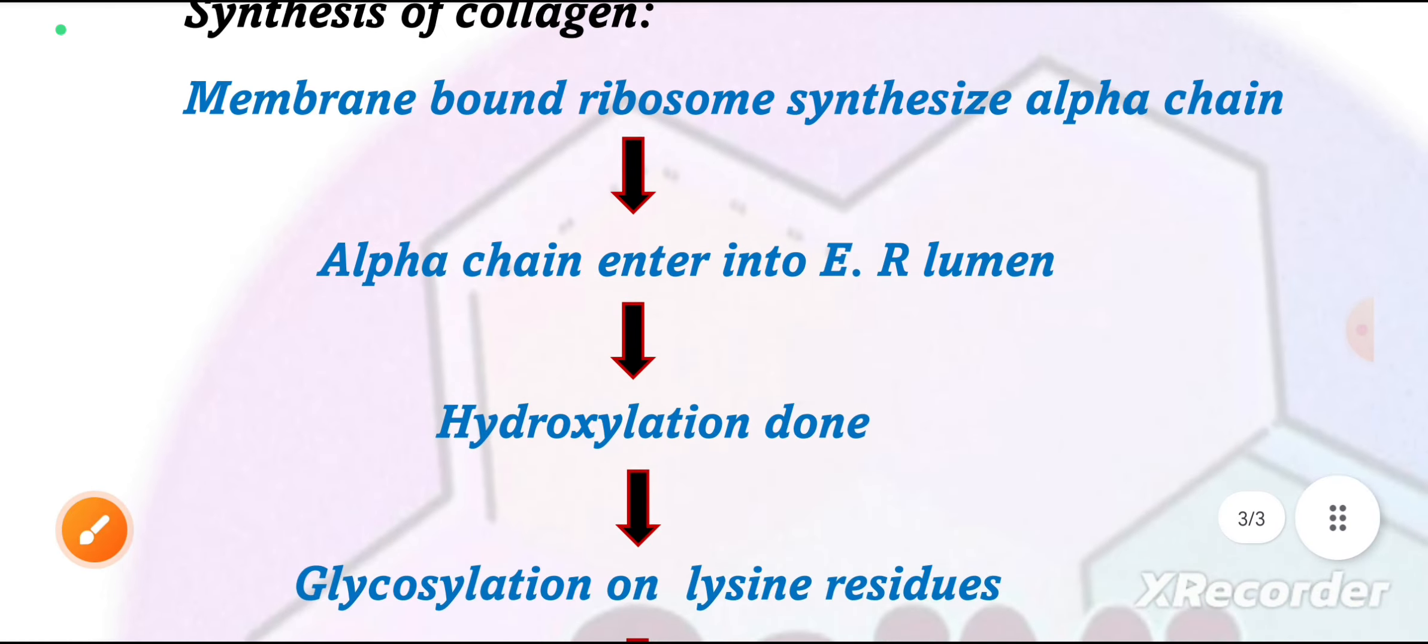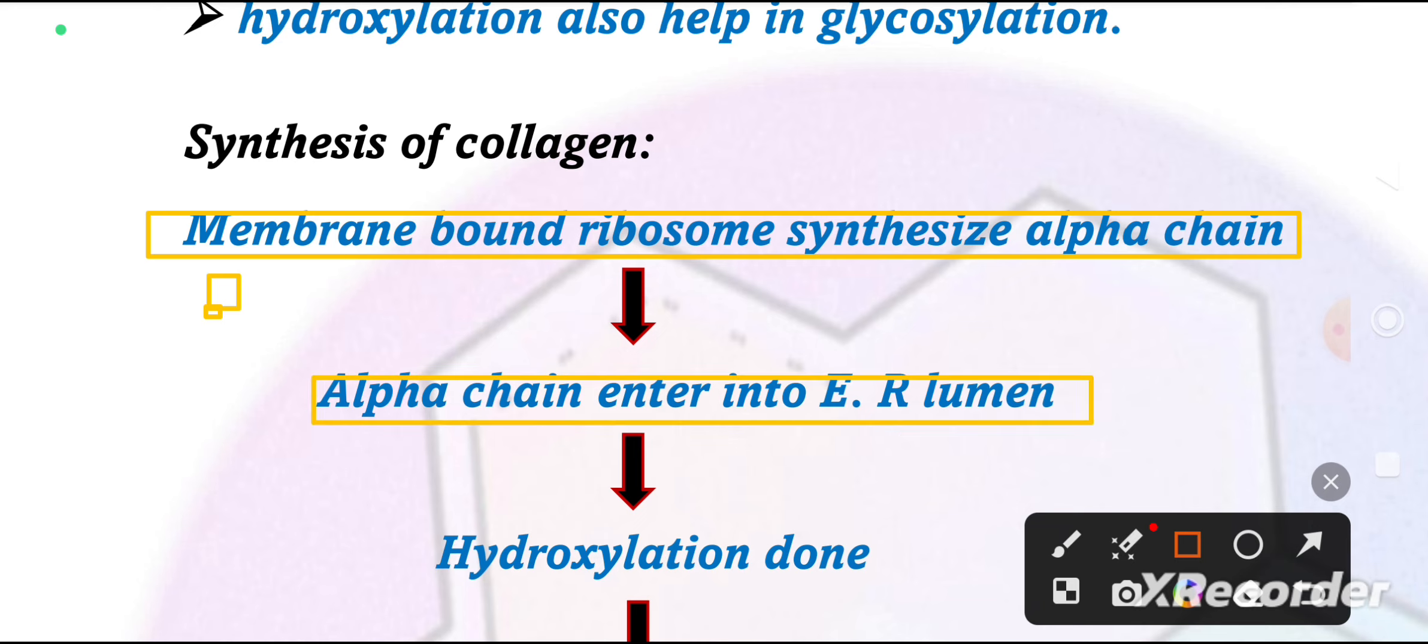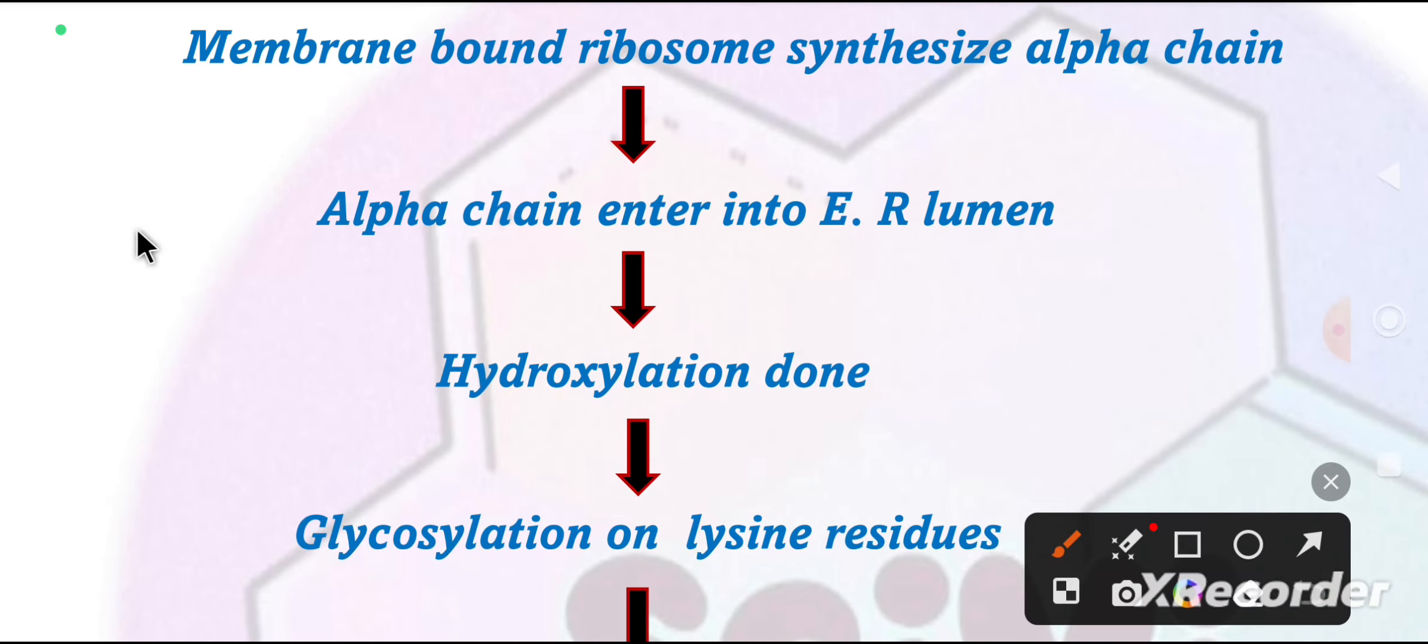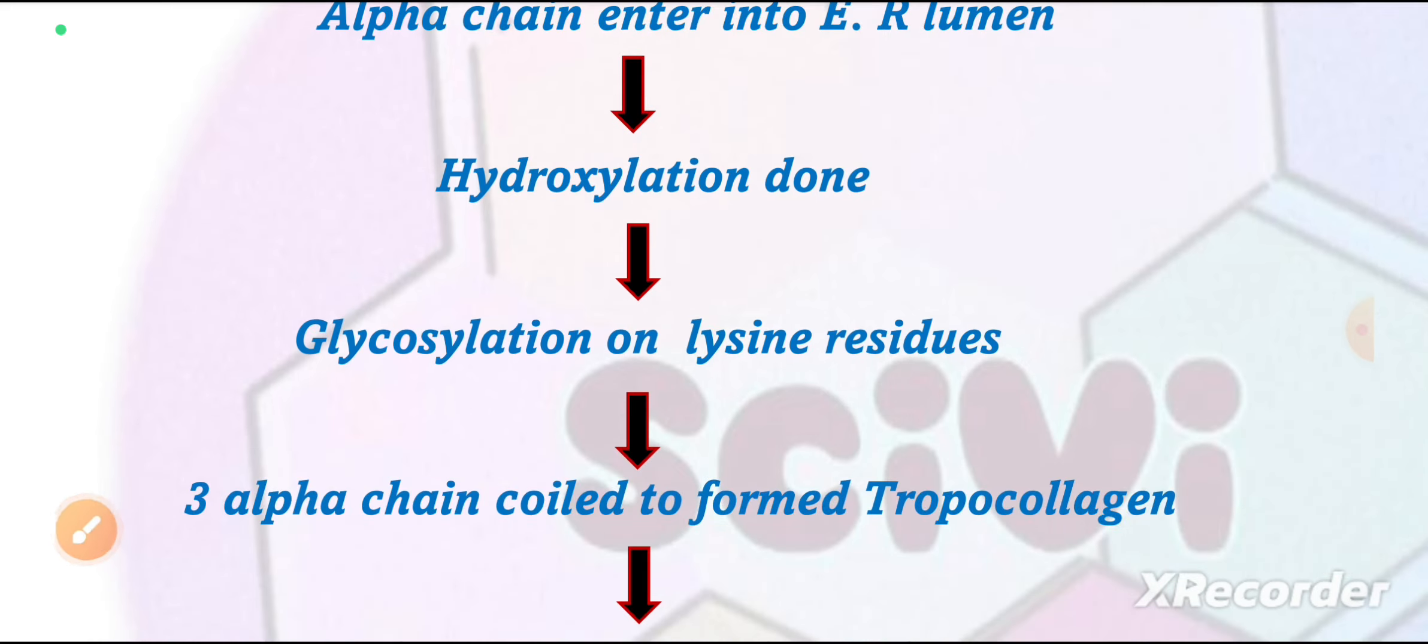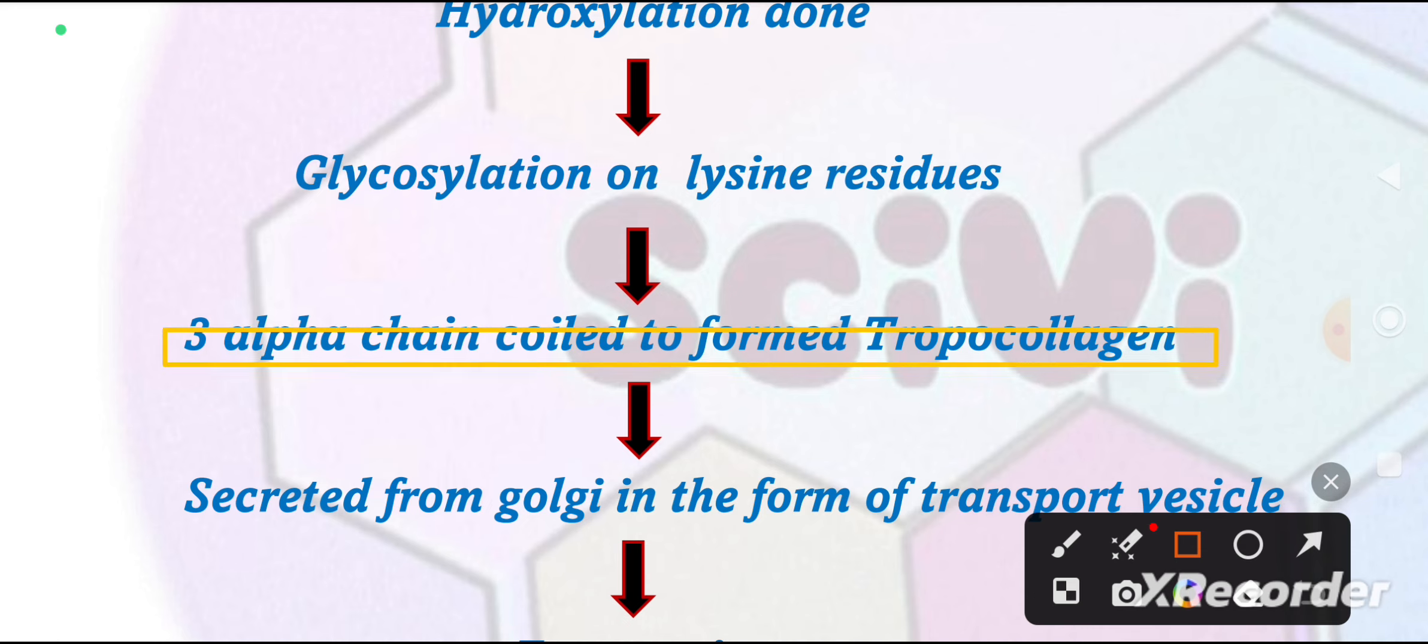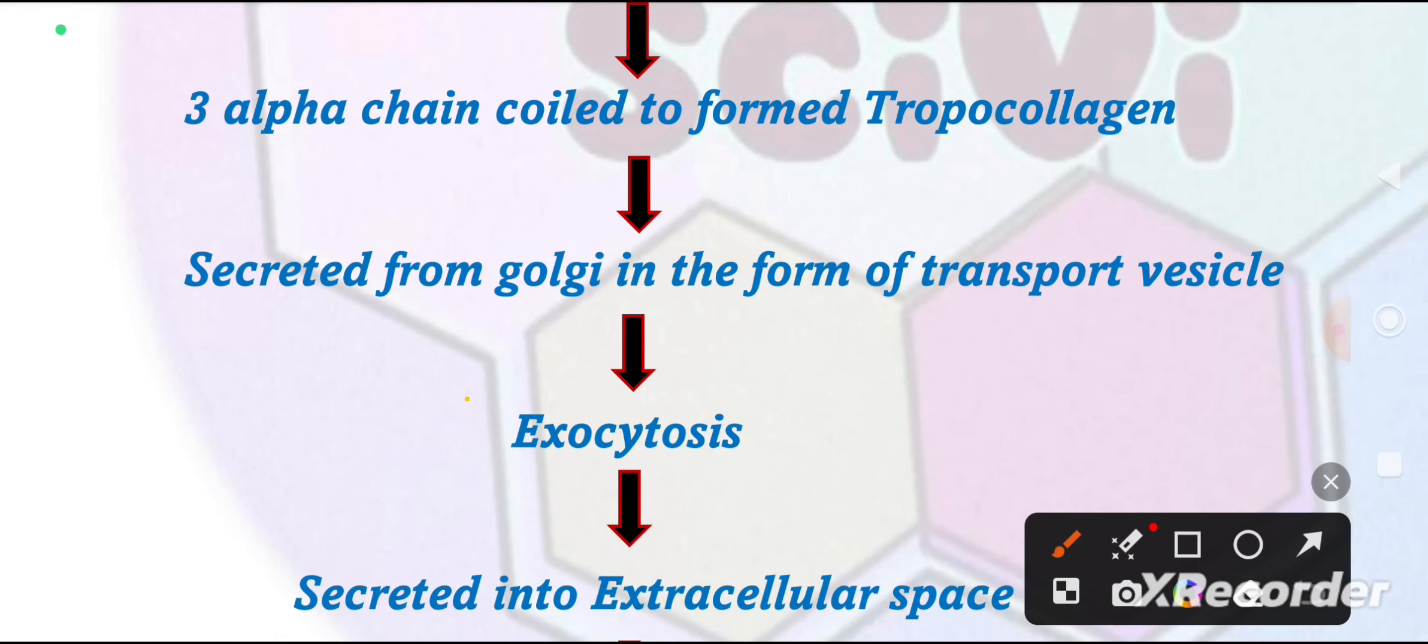A quick summary is that the membrane bound ribosome synthesizes alpha chains. Then they enter the ER lumen. Hydroxylation occurs on lysine and proline. Alpha chain has a glycine-X-Y pattern where glycine repeats, X is proline, and Y is hydroxyproline or hydroxylysine. Hydroxylation, glycosylation of lysine residues. Now these three alpha chains will form a tropocollagen in the form of secretory vesicle. It will release from Golgi through exocytosis through the cell.